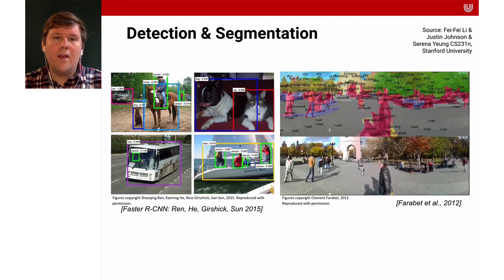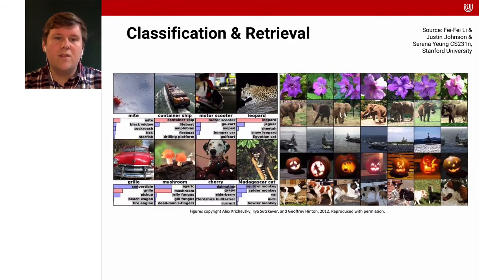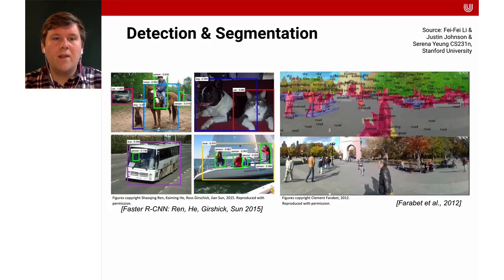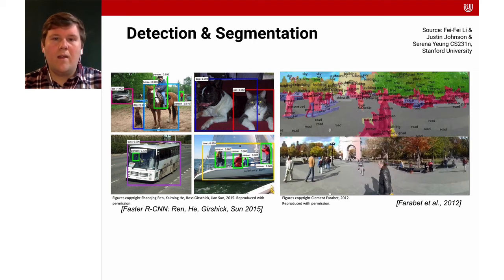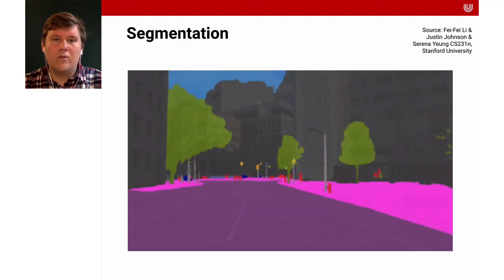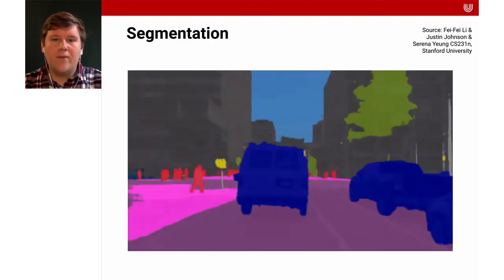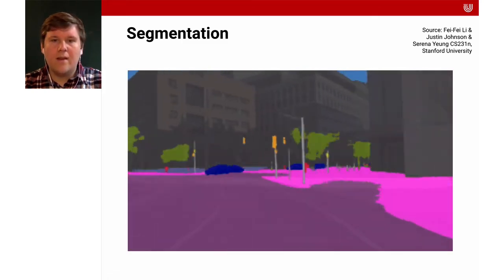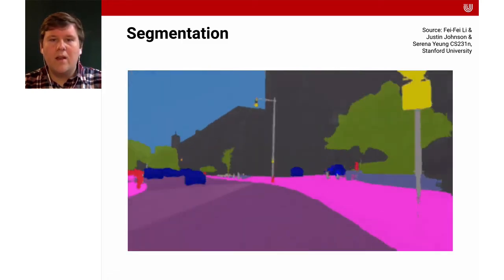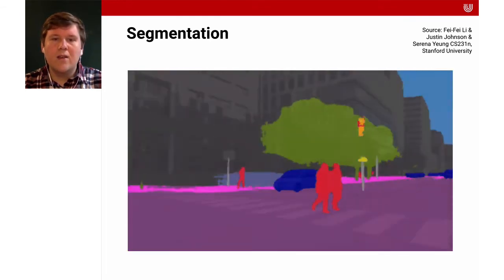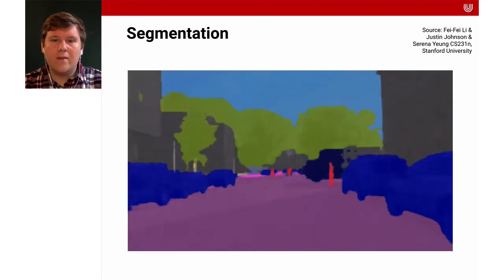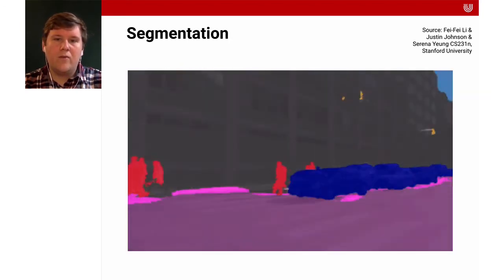Detection is an even more complicated problem. For classification, we just want to know whether there is a dog or a cherry in the image, but for detection we want to show exactly where the dog is — putting a bounding box around it and saying which pixels belong to the dog and which to the cat. Segmentation goes further, separating different parts of the image by which object they belong to. A nice video from a self-driving car demonstrates how segmentation and object recognition work in practice: cars are recognized as cars, we have the sidewalk, people, trees, and buildings all identified.